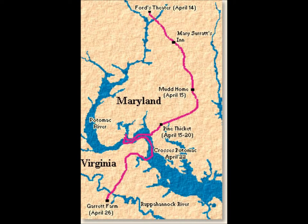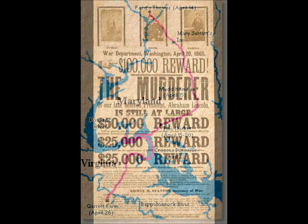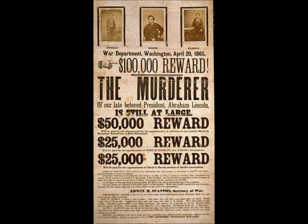They later rode off to Dr. Mudd's home. They woke him up at 4 a.m. to ask about Booth's leg. Booth and Harold both slept that night while Dr. Mudd rode to town to do some errands. He was enthralled and devastated when he heard about President Lincoln and his condition. He also heard of the attacker Booth, and quickly made his way home and kicked the two fugitives out of his house.